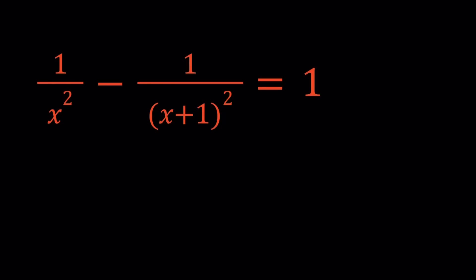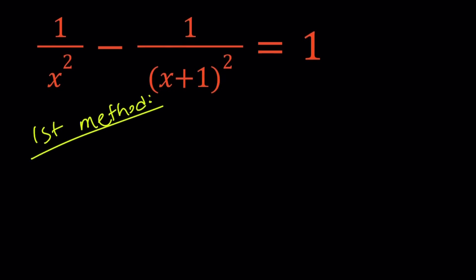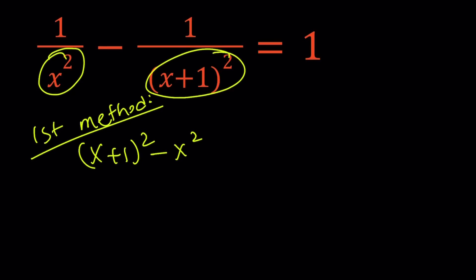I'll be presenting two methods. Let's start with the first one. For my first method, I'm going to go ahead and make a common denominator. And then we're going to get a difference of two squares. And at the bottom you're going to get the product of these, and if you multiply them together you get the following.